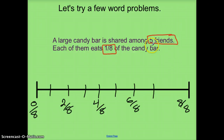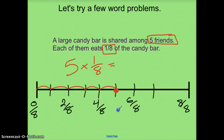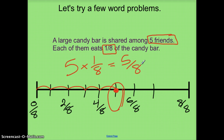Based on the fact that I have five friends, I'll show them here: first friend, two, three, four, and the fifth friend. So five friends each eating one-eighth of a candy bar — based on my number line, altogether they will have eaten five-eighths of the candy bar.